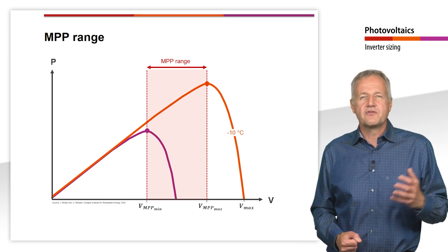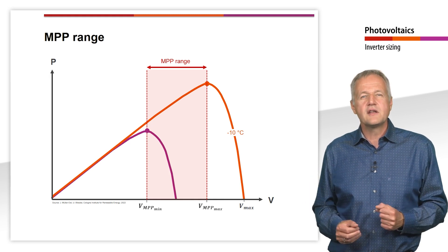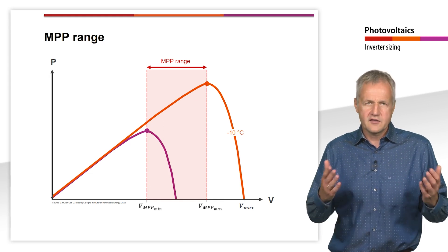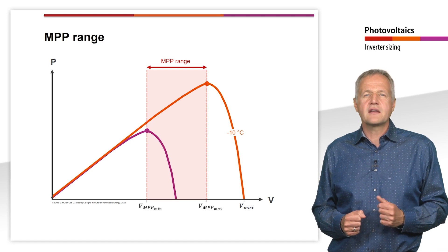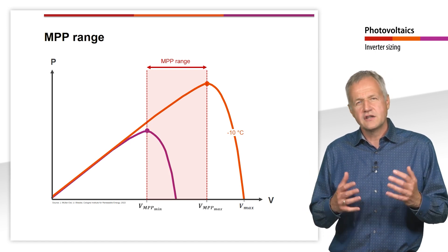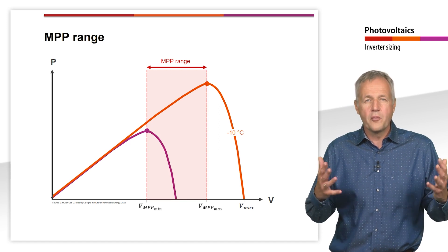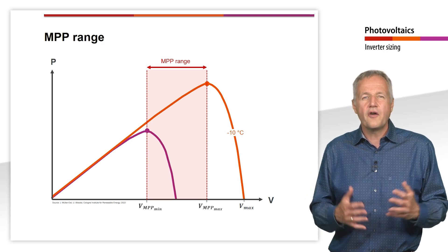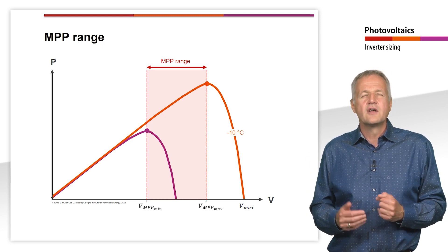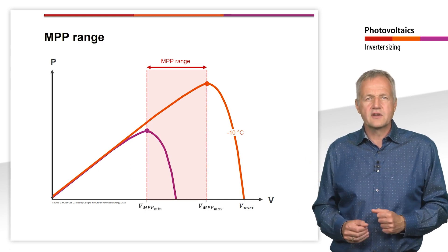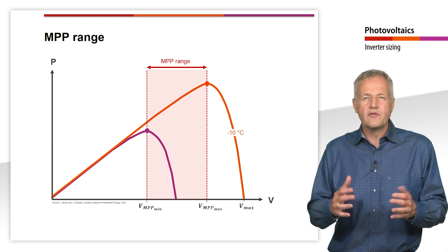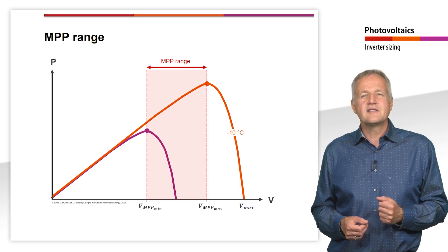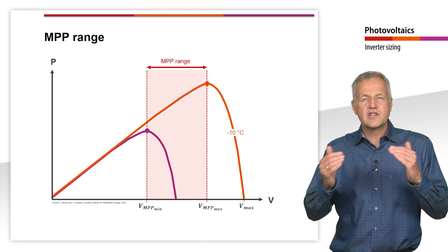If the MPP voltage range is exceeded, the generator is simply no longer operated at MPP and a small reduction in yield must be expected. If we also take into account that the solar modules heat up by 20 to 45 degrees Celsius during normal operation, it basically makes no sense to use the upper voltage limit of the MPP tracker as a design limit. So let's take a look at the lower voltage limit and ask ourselves when the lowest MPP voltage of the generator can be expected.